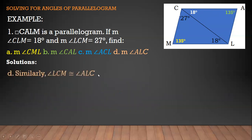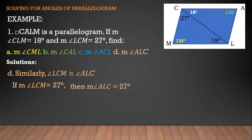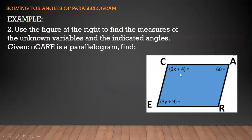Next, letter D: similarly, we are looking for the measure of angle ALC. Just as in letter C, angle LCM is congruent to angle ALC because of the alternate interior angle theorem — alternate interior angles are congruent. If the measure of angle LCM equals 27 degrees, then the measure of angle ALC is also 27 degrees. So those are all our angles for example one.